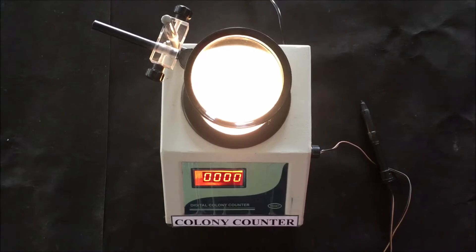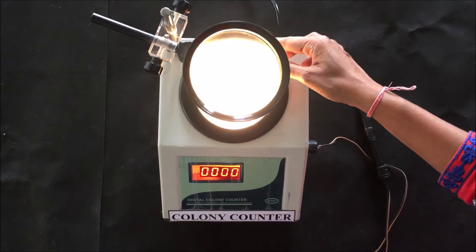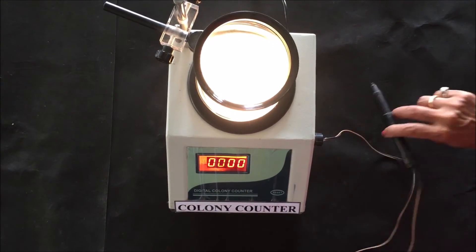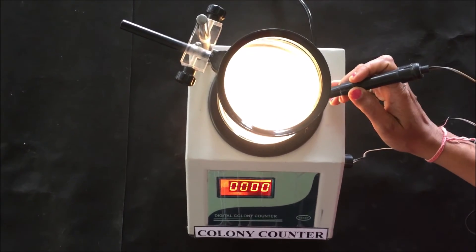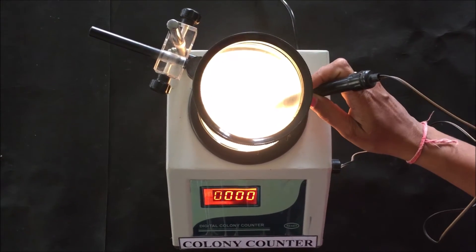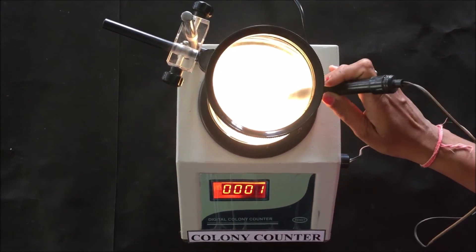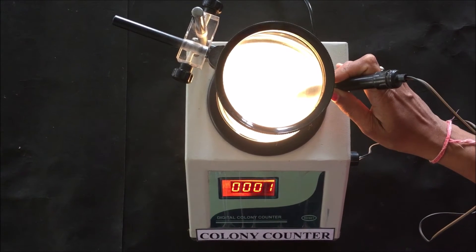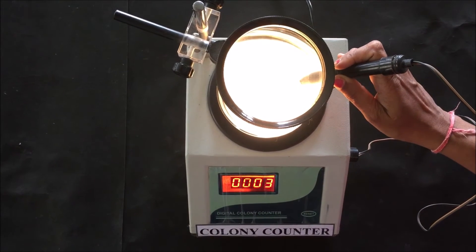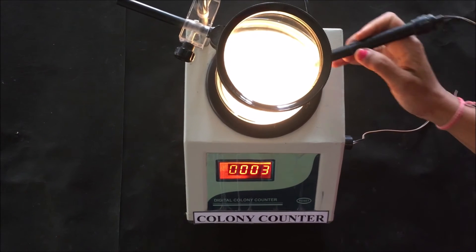Now place the petri dish on the illuminating surface of the instrument. Take the marker pen and properly press the tip of the pen on the colonies of the petri dish one by one. After each counting, you can hear a beep sound which ensures that the counting has been done, and simultaneously the display will show you the counting in numbers.